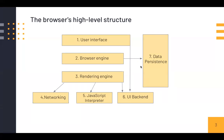Sixth is the UI backend, used for drawing — for example, you can tell it you want to see a rectangle and you'll see it on your monitor, using operating system UI methods underneath. And last but not least is data storage, a persistence layer. The browser may need to save data such as cookies, and it also supports storage mechanisms such as local storage, IndexedDB, and WebSQL. That completes the basic overview.